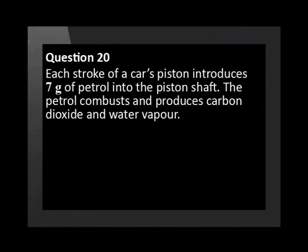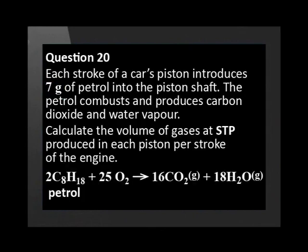Each stroke of a car's piston introduces 7 grams of petrol into the piston shaft. The petrol combusts and produces carbon dioxide and water vapor. Calculate the volume of gases at STP produced in each piston per stroke of the engine.